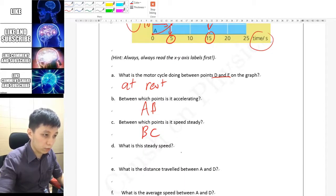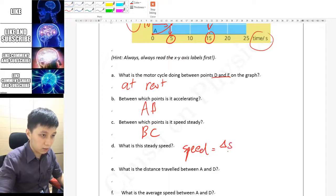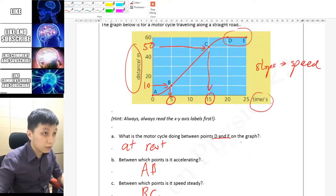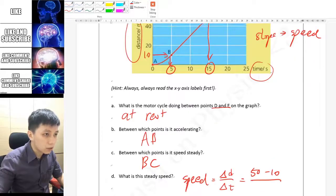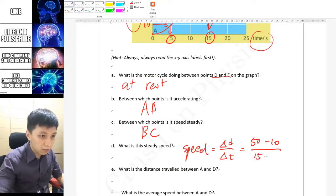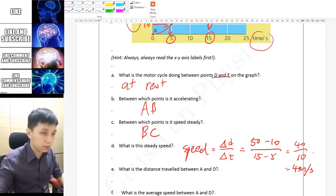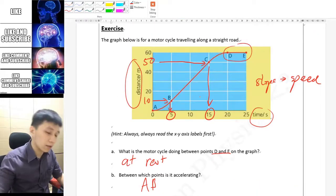What you want to do is you can say speed equals to delta distance over T. And D will be 50 minus 10 over T. D will be 15 minus 5, so you get 40 over 10, that is 4 meters per second.